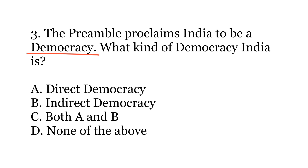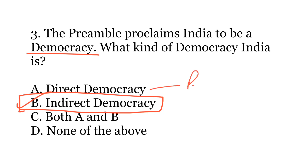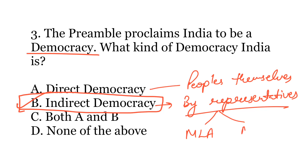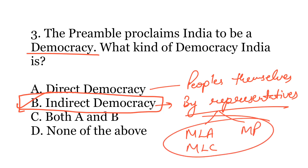The correct option is B. Indirect democracy. Direct democracy means where people themselves make laws, but that is not so in India. In India, laws are made by representatives — members of legislative assembly, members of parliament, or members of legislative council — who run various institutions of the state as well as of the union. Therefore, India is an indirect democracy.